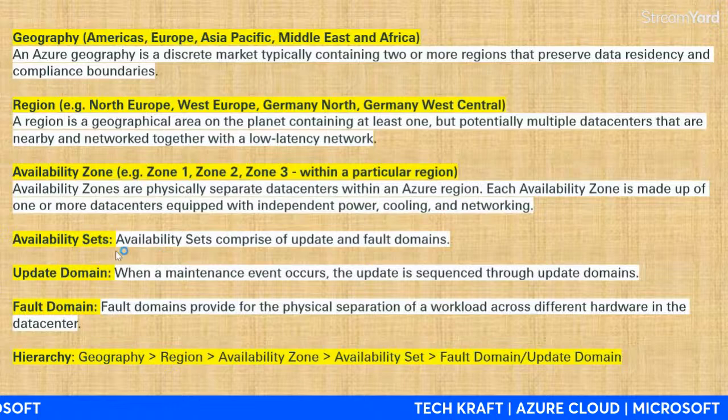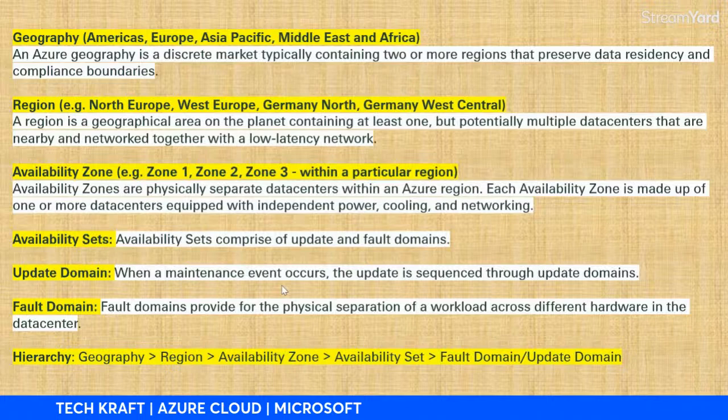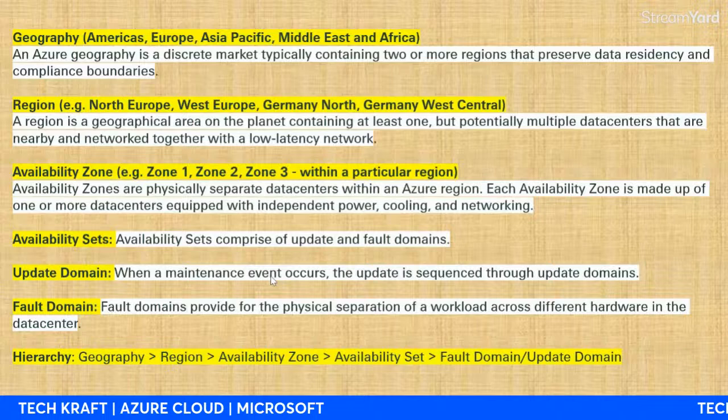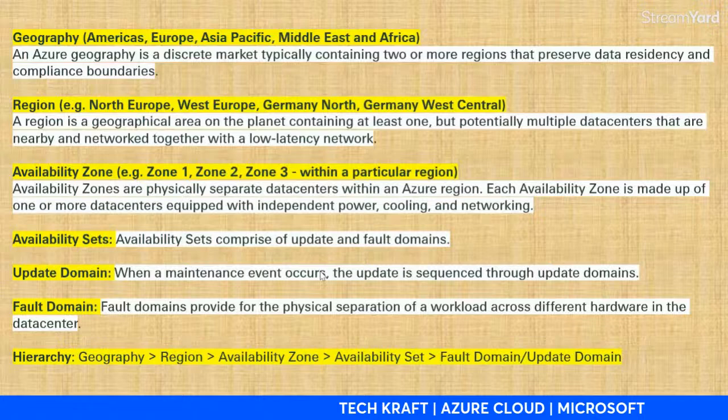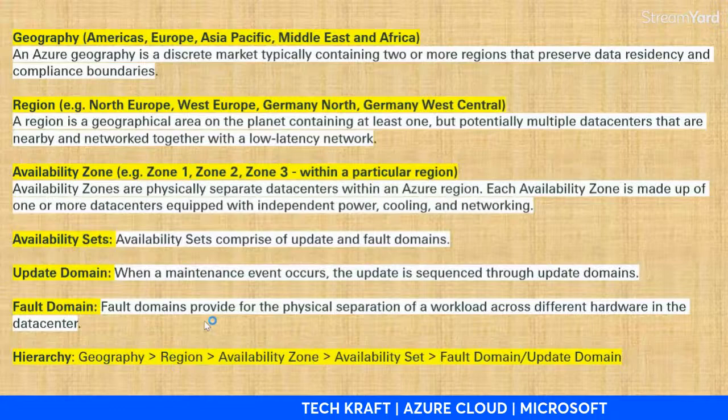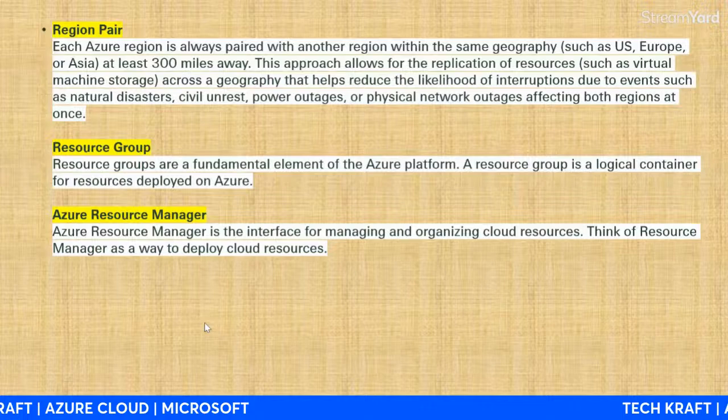Update domain means when maintenance occurs in a particular zone — due to some disaster or scheduled maintenance — the service updates the resources in that zone. Fault domain and update domain are more advanced topics. The key hierarchy to remember is: Geography, Region, Availability Zone, Availability Set, Fault Domain, Update Domain.